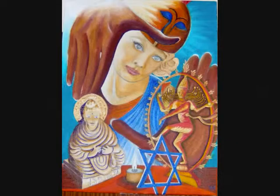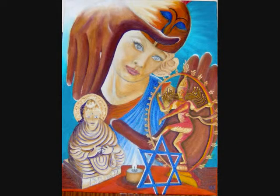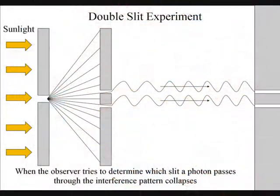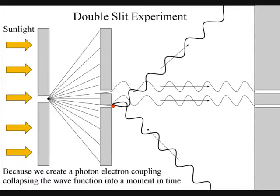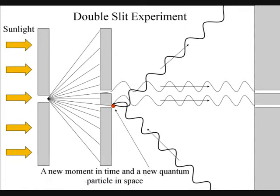When the observer tries to determine which slit the photon passes through, the interference pattern collapses. This is because to observe the photon, we have to create a photon-electron coupling, collapsing the wave function, creating a new moment in time and a new particle in space.